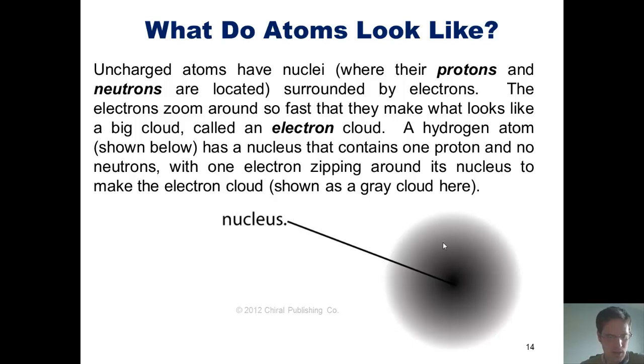has a nucleus that contains one proton and no neutrons, with a single electron zipping around its nucleus to form the electron cloud, which is shown as a gray-colored cloud here.